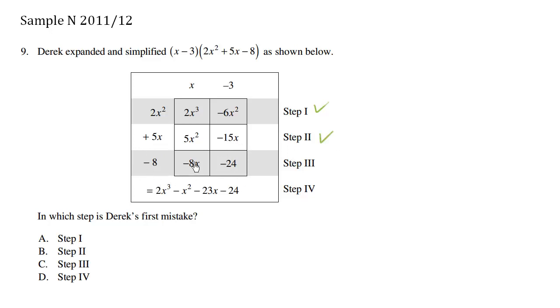Step 3 or row 3. -8 times x is -8x. Correct. -8 times -3 is positive 24. So this here is -24. It should be positive 24, so this step is wrong.